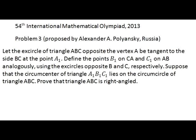International Mathematical Olympiad 2013, Problem 3. Let the excircle of triangle ABC opposite vertex A be tangent to the side BC at the point A1. Define the points B1 on CA and C1 on AB analogously using the excircles opposite B and C respectively. Suppose that the circumcenter of triangle A1B1C1 lies on the circumcircle of triangle ABC. Prove that triangle ABC is right-angled.